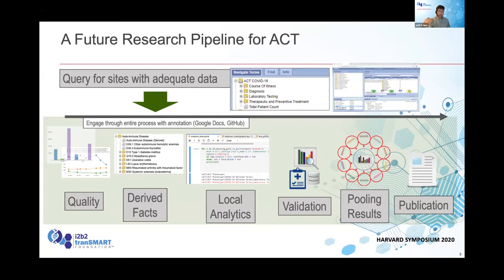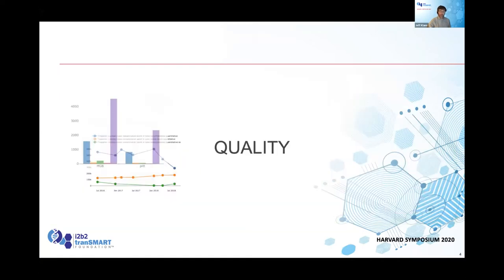Then you can create derived facts like Sean talked about in the ACT session previously. Then you have reusable local analytics that allow you to do analysis without writing local code. Then you do local validation to see if the data that came out of your local analytics really matches what you intended — like the ICU example just discussed. Are you really getting patients that match what you're looking for? Then you can pull all results together in a collaborative way using shared tools like Google Docs and GitHub into a transparently written publication.